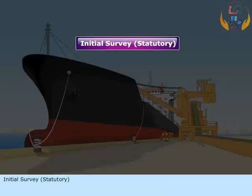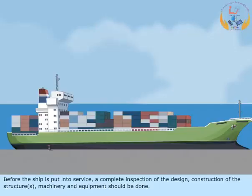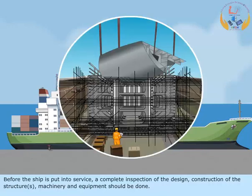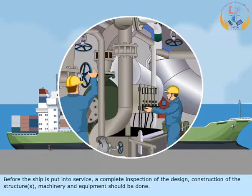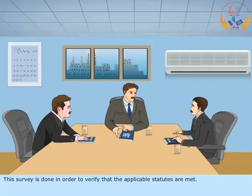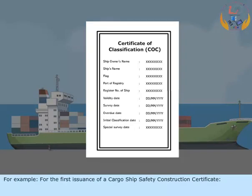Initial survey, statutory. Before the ship is put into service, a complete inspection of the design, construction of the structures, machinery and equipment should be done. This survey is done in order to verify that the applicable statutes are met. For example, for the first issuance of a cargo ship safety construction certificate.